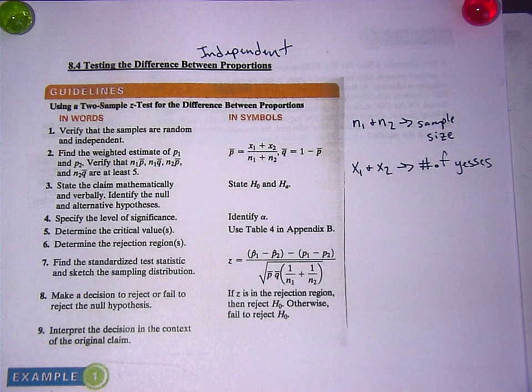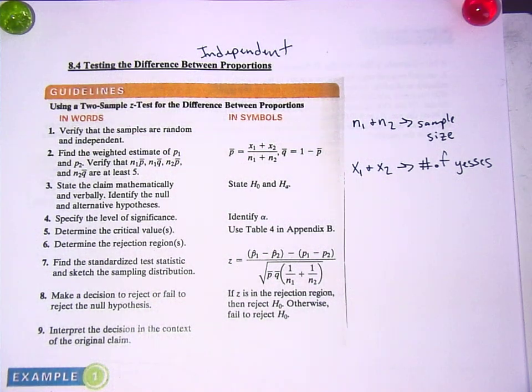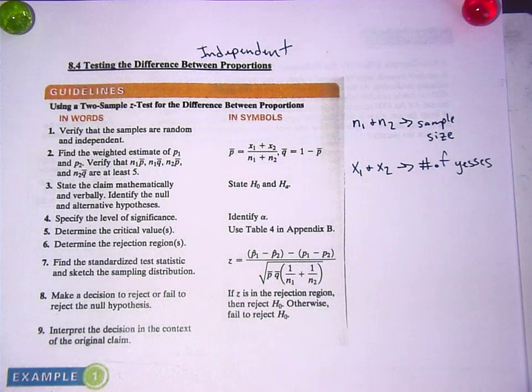And so, to find P bar, you basically add your successes over your totals. And you combine them. And Q bar is 1 minus P bar. Why is it P bar? Because it's the average of your proportions.